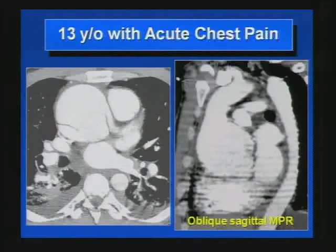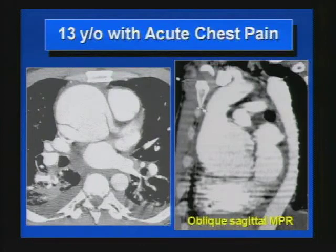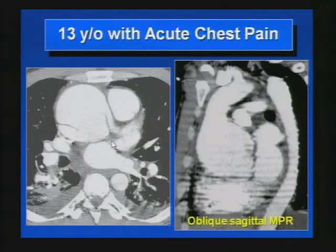Next patient: 13-year-old with acute chest pain. There are two things to identify: first, this huge dilatation of the sinus of Valsalva, and note that the aorta becomes normal in diameter above the sinotubular junction. At the level of the right pulmonary artery, the diameter is normal. This is consistent with annuloaortic ectasia. These patients are prone to dissection and rupture of the aorta. Here we can see an intimal flap at the level of the ascending aorta — type A dissection. The flap does not extend inside the left main coronary artery but does extend to the ostium.